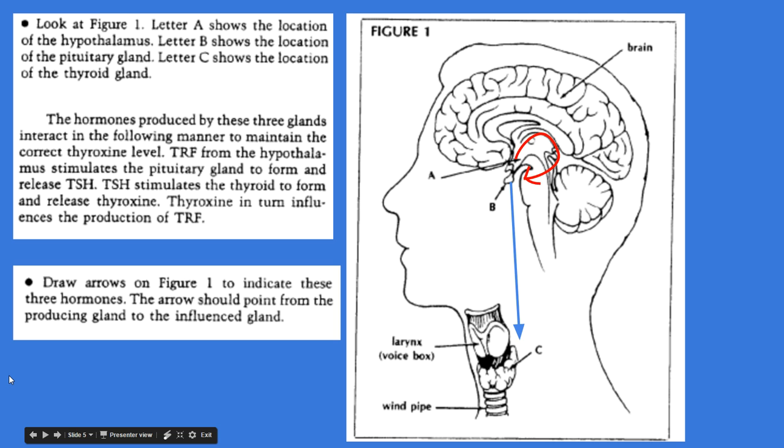The next one points from B, the pituitary gland, down to C, the thyroid. Okay, so the pituitary gland is producing the TSH, and then the thyroid in response is going to be producing the thyroxine. This is the cascade, A to B, B to C.